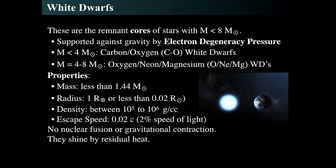The radius of white dwarfs is about an Earth radius, or about 2% that of the Sun. The density is roughly a million grams per cubic centimeter, and the escape speed is about 2% that of the speed of light.